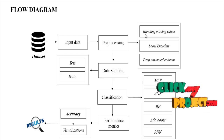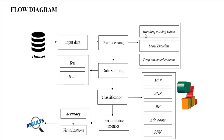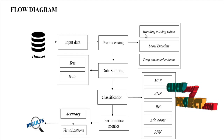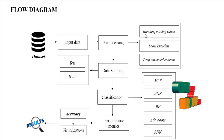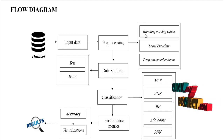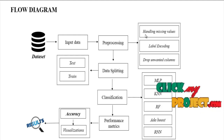Then we drop unwanted columns. In our dataset, we have many columns, so we remove the ones not required for our process. These are the pre-processing steps.